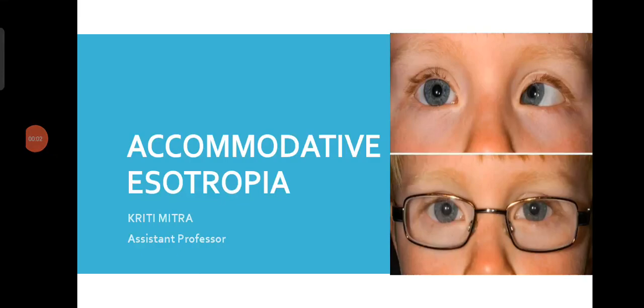Hello all, today I will be discussing Accommodative Esotropia. Accommodative Esotropia means Esotropia that is caused due to excessive or over-accommodation. This condition specifically happens in high hypermetropic children. If the child has high plus power, they cannot accommodate while seeing objects at near, and this can give rise to Accommodative Esotropia, which is fairly corrected by glasses.